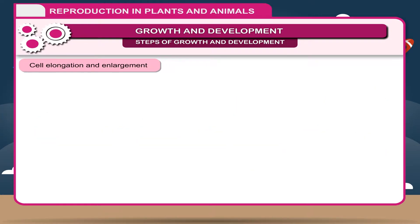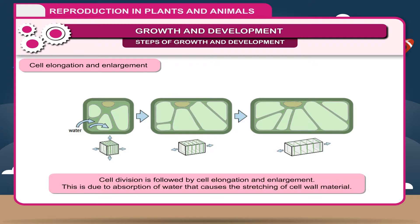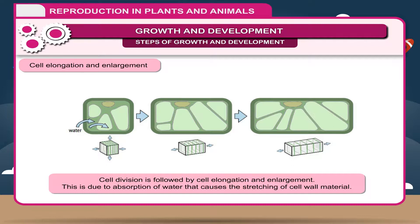Cell Elongation and Enlargement: Cell division is followed by cell elongation and enlargement. This is due to absorption of water that causes the stretching of cell wall material.